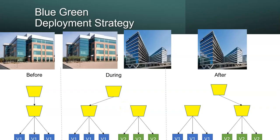In the blue-green deployment strategy, assume your organization has one office and they are trying to move to another office for various reasons. They don't simply move — there is background work like configuring and setting up the entire new building with all the requirements. Assume the old building is V1 and the new building is V2. You set everything up in V2 first, test it with a few people, and if it all works fine, all employees are switched to the new office.